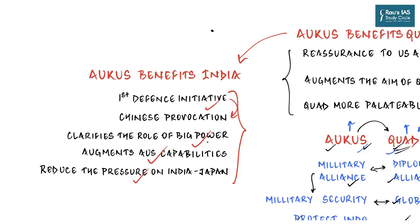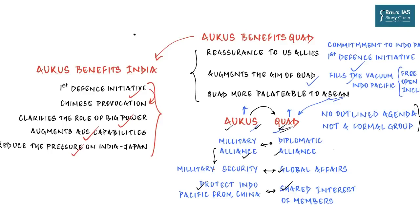However, AUKUS is not without negative implications for India. The tussle between AUKUS countries and France discourages consensus on the larger issue of China's rise, and France's discontent feeds China's narrative about US unreliability. Since France is a very good partner for India, its frustration is not good for India's long-term interests. Overall, AUKUS augments QUAD's objective and increases India's quest for a free and open Indo-Pacific in line with its principle of strategic autonomy.